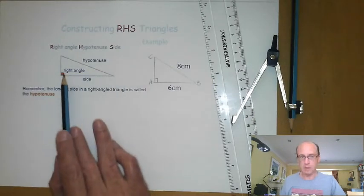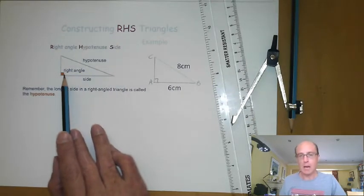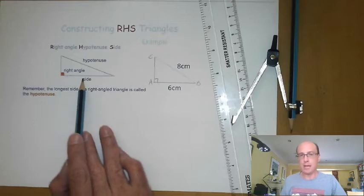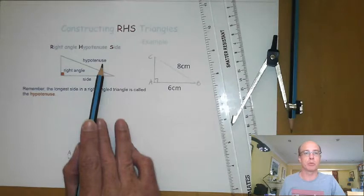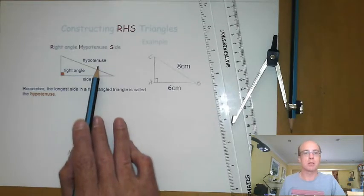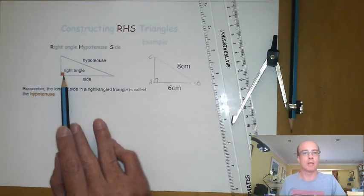So we've got a triangle, we've got a right angle in the corner, we've got a base side which we know the length of, we've got the hypotenuse, the longest side which we also know the length of. Remember the hypotenuse is always going to be opposite the right angle here.